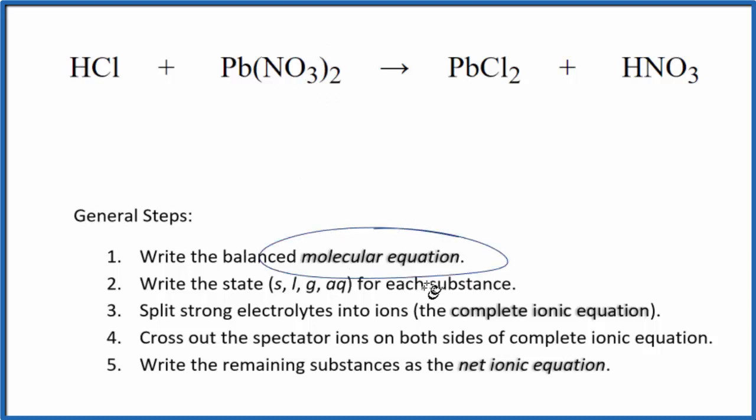First, we need to balance the molecular equation. I can see there are two chlorine atoms here and just one here, so I'm going to put a 2 in front of the HCl. I also have a nitrate group here and here, so I need to put a 2 in front of the HNO₃. That gives me two hydrogens, which balances these two hydrogens. Everything else is the same on both sides, so we've balanced the molecular equation.